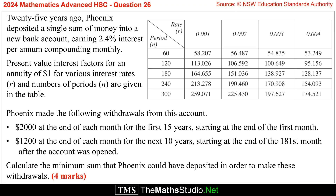Phoenix made the following withdrawals from this account: $2,000 at the end of each month for the first 15 years, starting at the end of the first month, and $1,200 at the end of each month for the next 10 years, starting at the end of the 181st month after the account was opened. Calculate the minimum sum that Phoenix could have deposited in order to make these withdrawals.